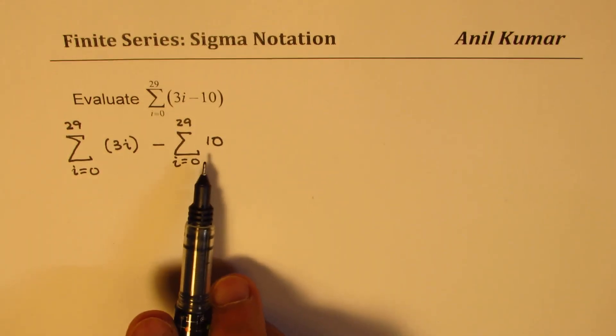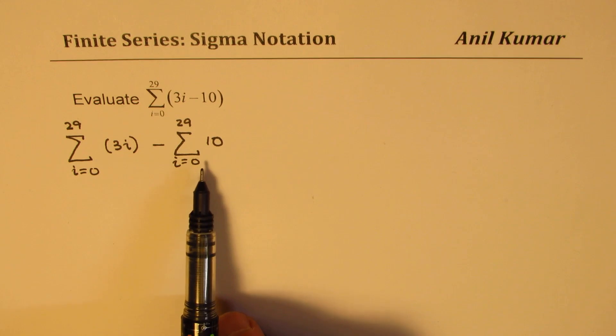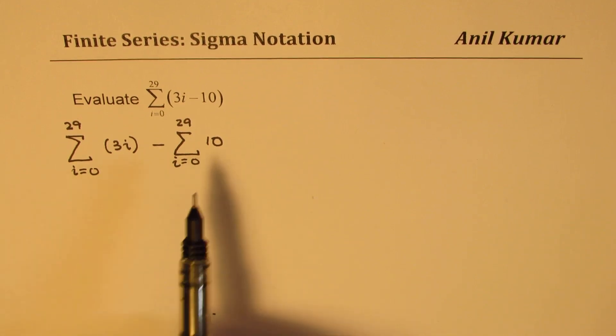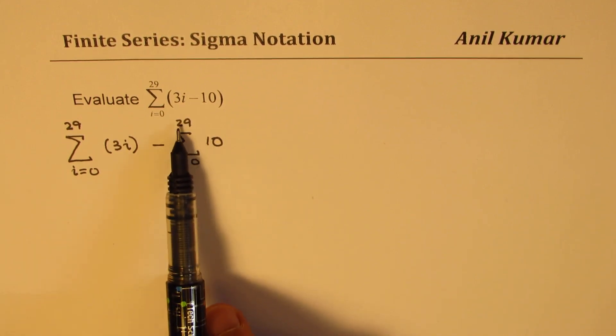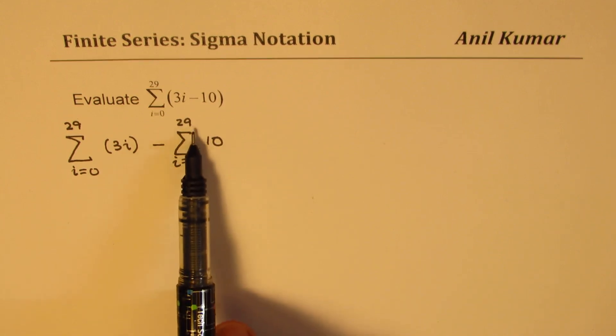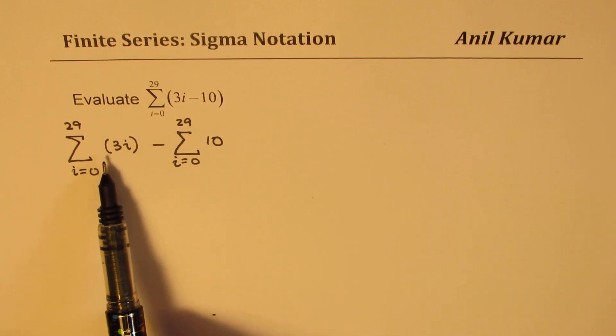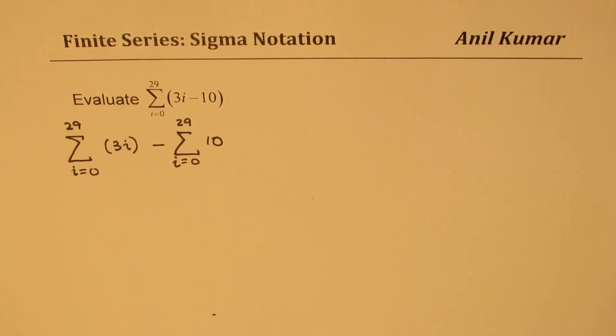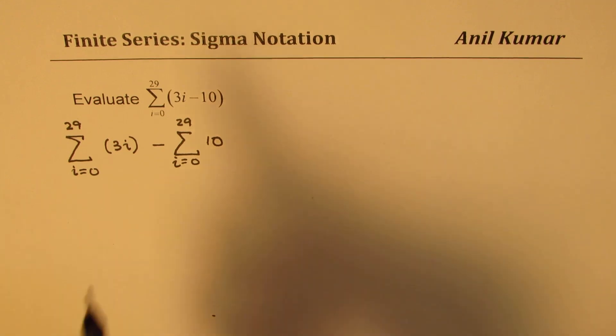Now as far as this term is concerned, there are how many terms which are 10? That is one thing which you need to figure out. Some of you might think it is 29. That may be a mistake. Here again, if I write 0 to 29, sometimes it creates a confusion. So what I will do here is basically take the 0th term separately, so that that confusion is not there.